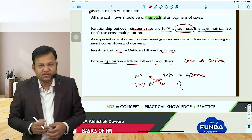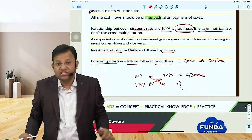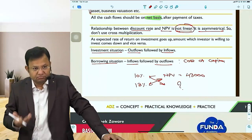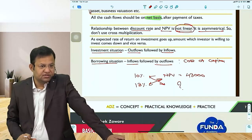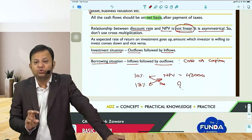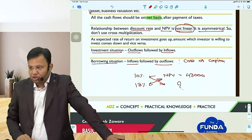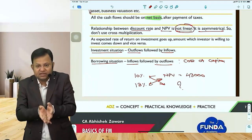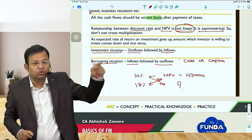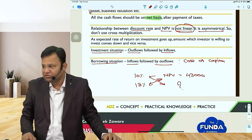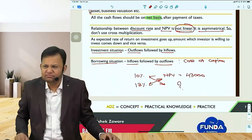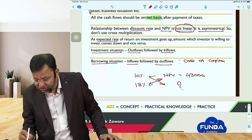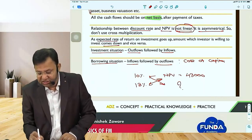If the expected rate of return that investors expect goes up — which is the situation right now — there is risk aversion in the market. Japanese yen has hit almost a 30-year low because money is flowing to the safe haven of the US dollar. From risky assets, money is going to safe assets and dollar-denominated bonds. US long-term bonds are yielding about 3.2%. As expected rate of return goes up, the amount an investor is willing to invest comes down, and vice versa.